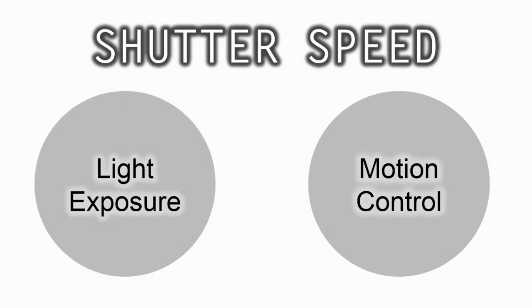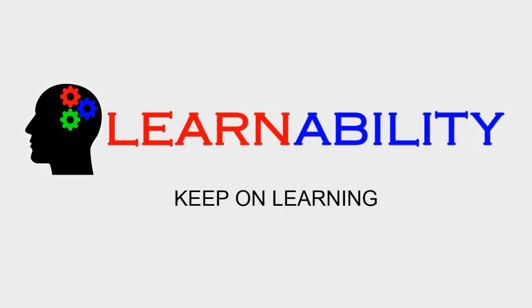So there you go. You just learned all about shutter speeds. And it turns out the two parts of shutter speed, light exposure and motion control, were linked together all along for you to take that perfect shot. Thanks for watching this learnability video. Keep on learning.